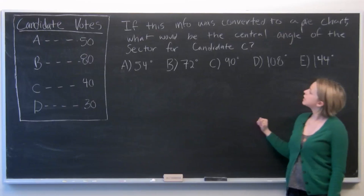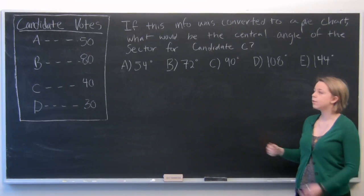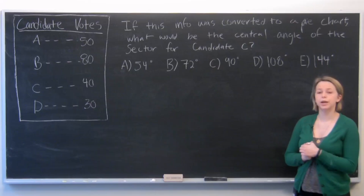And our question reads, if this info was converted to a pie chart, what would be the central angle for the sector belonging to candidate C?